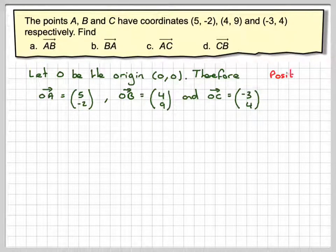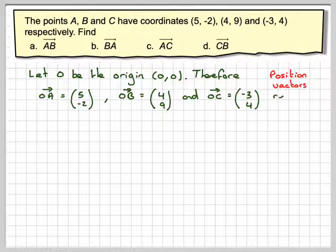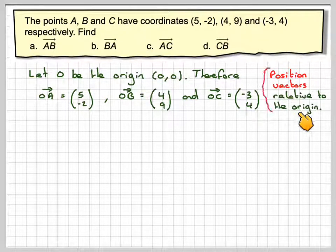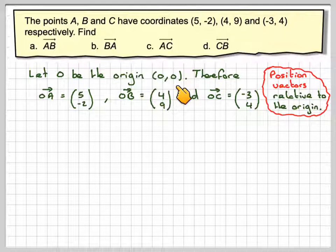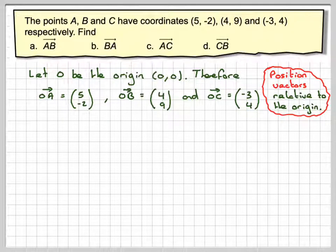Now, these are called position vectors. The vectors are relative to a particular point. In this case, the origin, the point (0, 0). Now, that now allows us to find the vectors AB and BA and AC and CB without actually drawing a diagram.